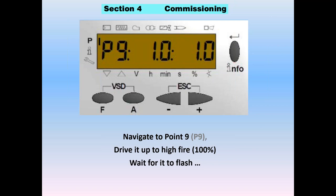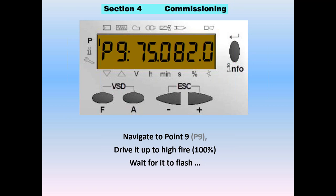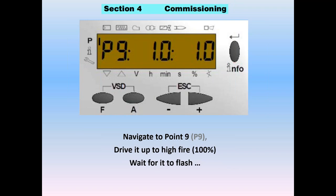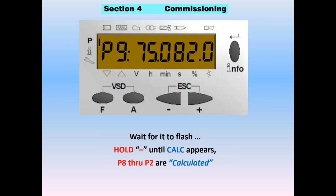Navigate to point number 9, go plus, plus, plus, and you see we're out there with our initial ignition settings. Then advance the air and gas until you get to high fire. Wait for P9 to flash so that the high fire settings are validated. In this example, we're at 75 degrees and 82 degrees for high fire. Now our curve has a rather sharp L shape — perfectly flat, and then when it gets to point 9, it goes up into high fire. This is a precarious curve; you want to be careful with the transition from P9 to P8.